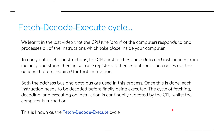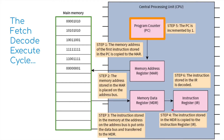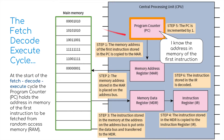I've got some diagrams here to show you exactly what I'm talking about. On the right-hand side we've got the CPU; on the left-hand side we've got the main memory. The thing that's highlighted is called the program counter. It knows the address in memory of the first instruction — it knows where the first instruction lives in the main memory. So at the start of the fetch-decode-execute cycle, the program counter, or PC, holds the address in memory of the first instruction to be fetched from RAM.